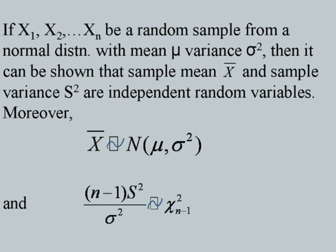An important result on independence: if X1, X2, ..., Xn is a random sample from a normal distribution with mean mu and variance sigma-square, then the sample mean X-bar and the sample variance S-square are independent random variables. X-bar follows a normal distribution, and (n minus 1) S-square by sigma-square follows a chi-square distribution with n minus 1 degrees of freedom. The independence of X-bar and S-square holds when Xi's are IID normal.